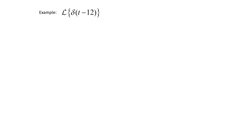Let's apply that to some examples. For our first example, we want to find the Laplace transform of the Dirac delta function at t minus 12. So our t naught value is 12 here. We'll just plug that into the formula. This Laplace transform is going to be e to the negative 12s.